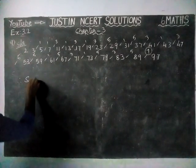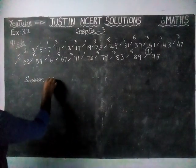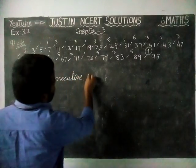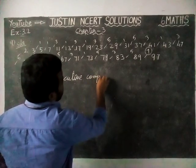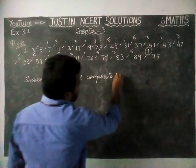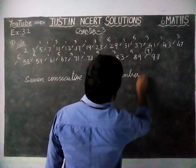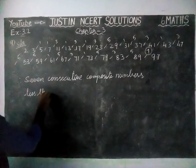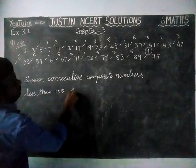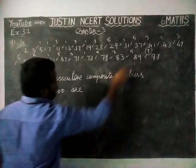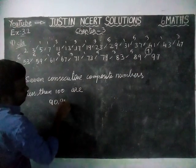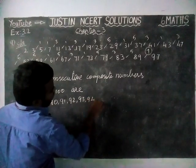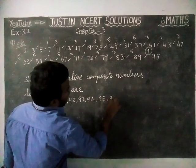Therefore, the 7 consecutive composite numbers less than 100 are: 90, 91, 92, 93, 94, 95, 96.